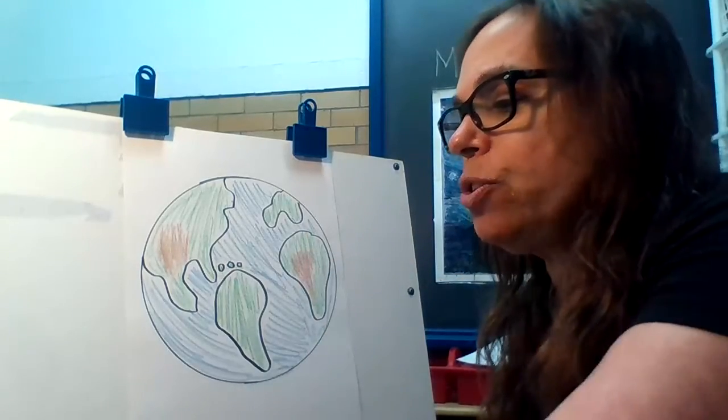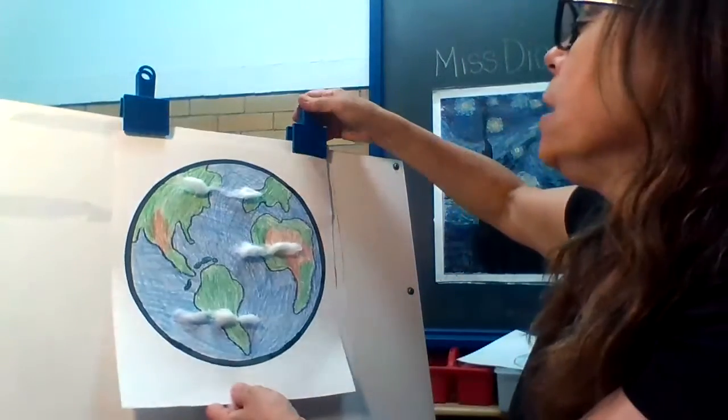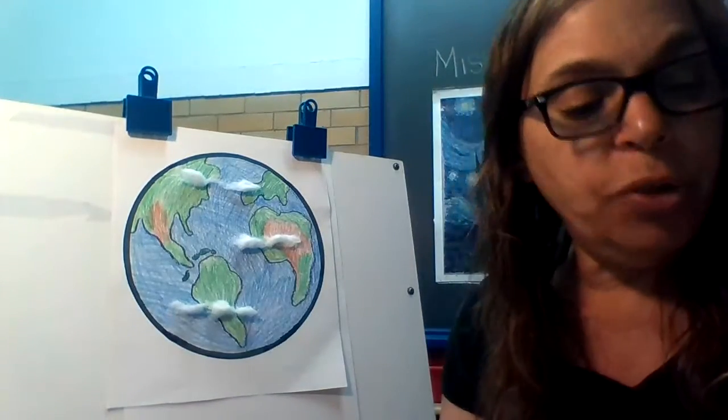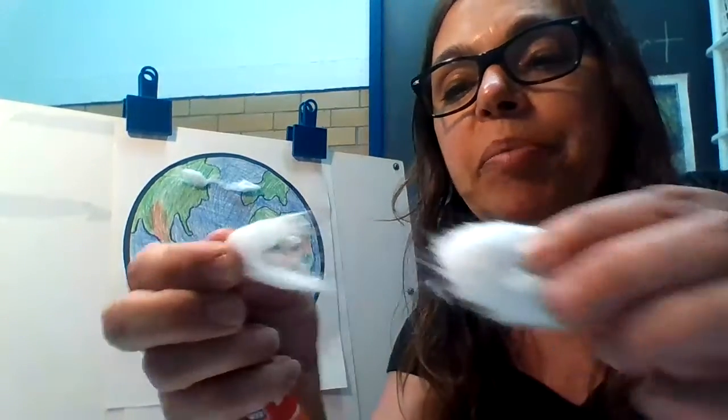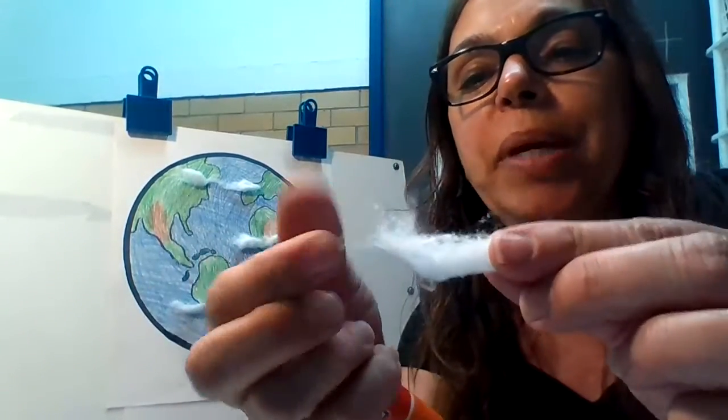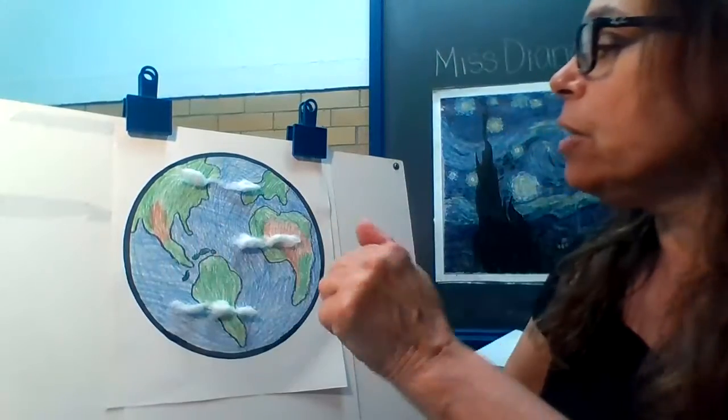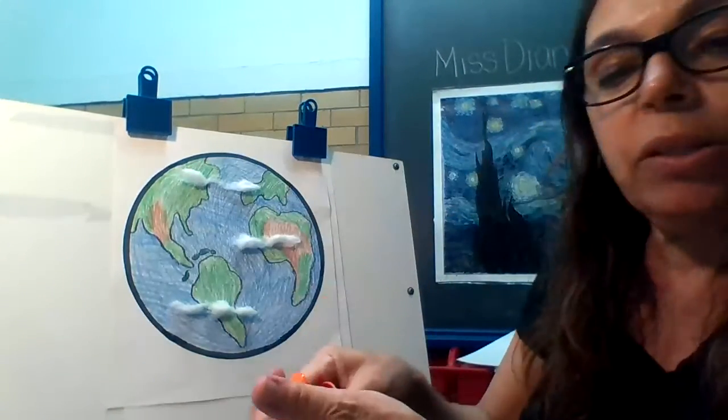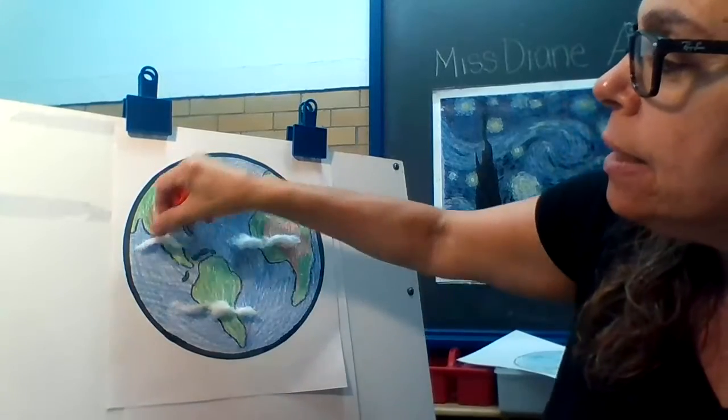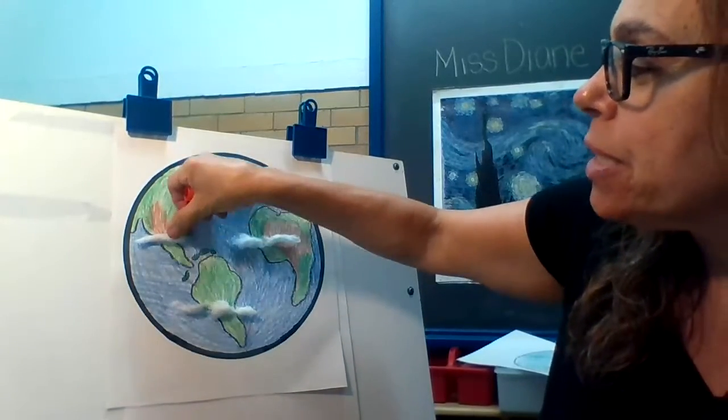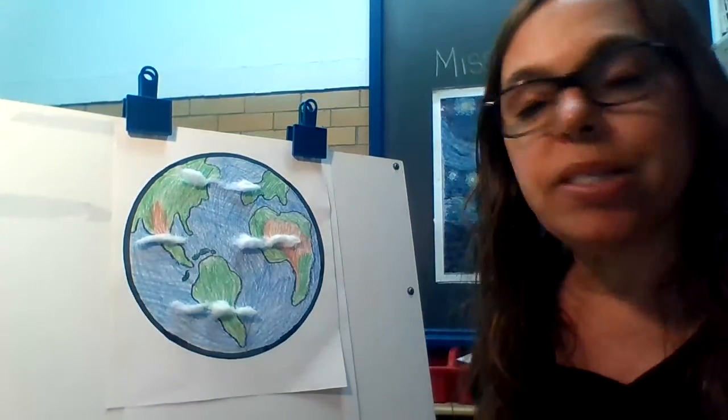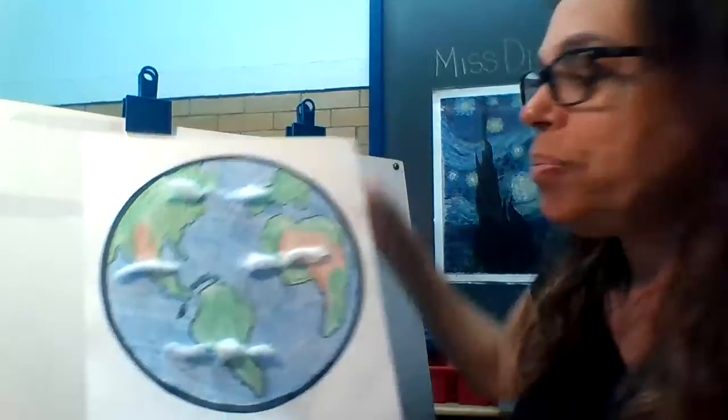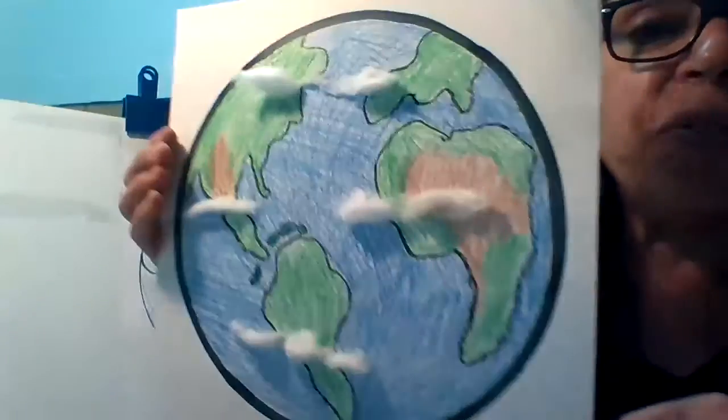When you're finished, it'll look something like this. Then if you want, you can take a cotton ball and pull it apart into little pieces. You can glue it on to your paper. Put some glue onto your paper with a glue stick and stick on the cotton. It makes it look like clouds.